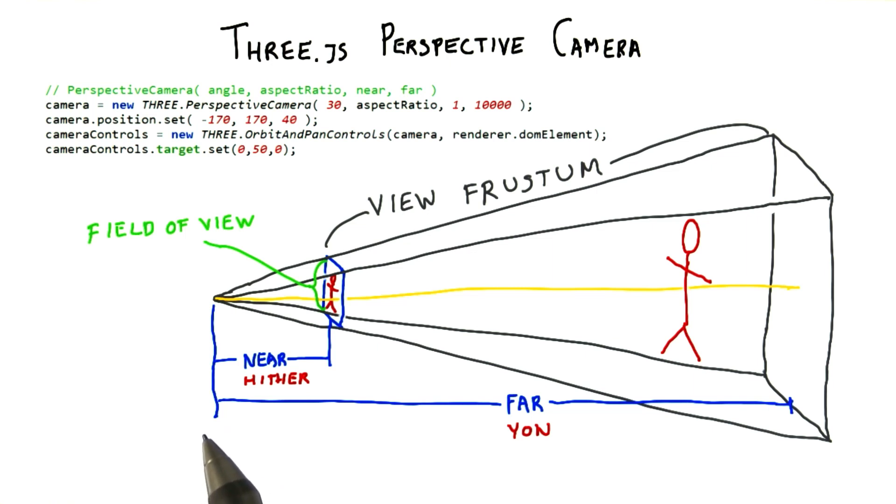The field of view, along with the aspect ratio, fully describe the locations of the four sides of the pyramid.